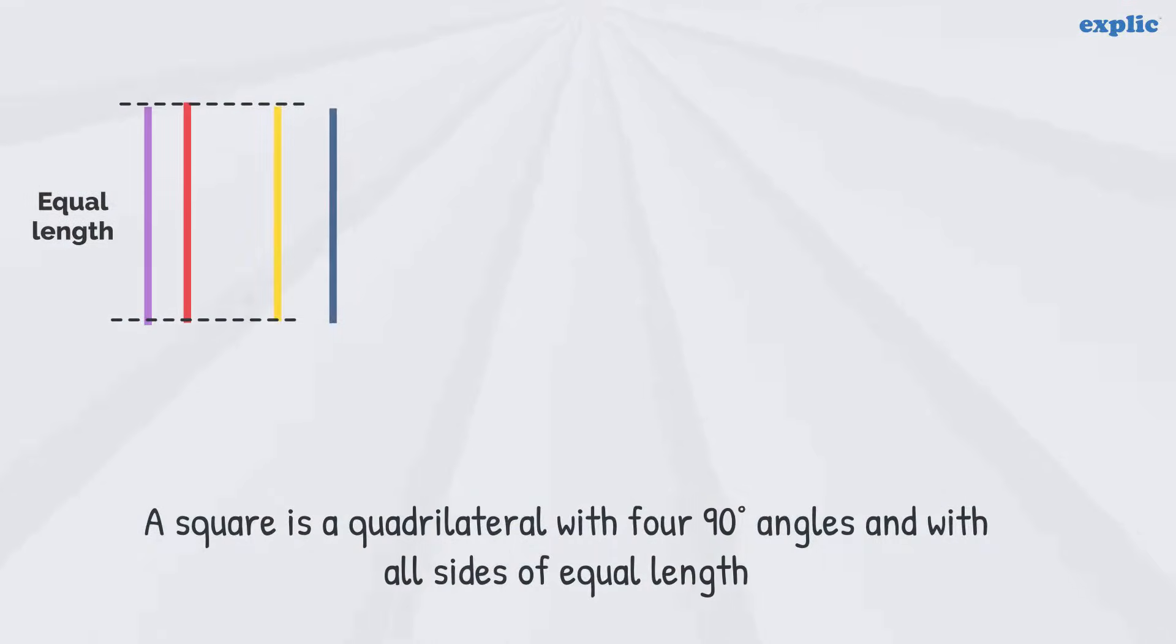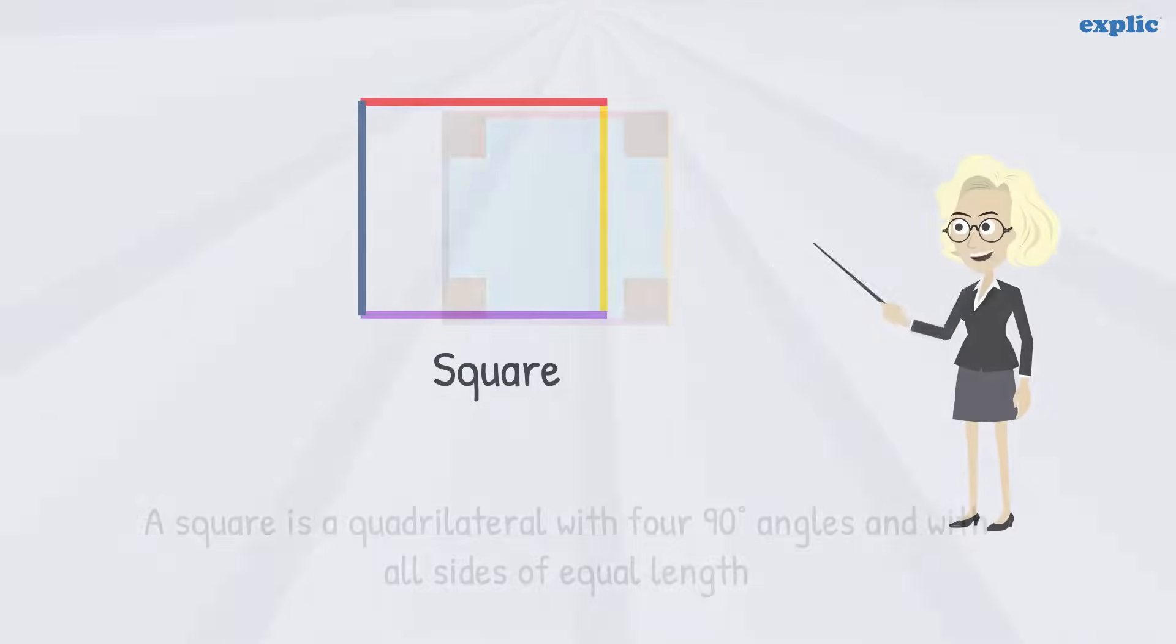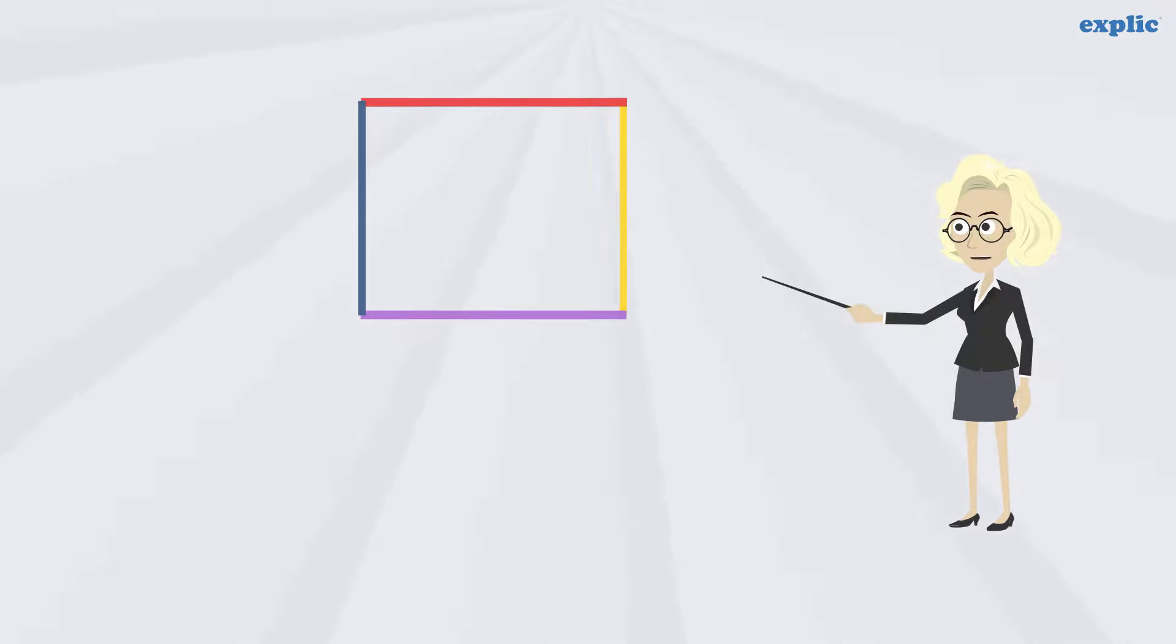A square is a quadrilateral with four 90-degree angles and with all sides of equal length. If you compare a rectangle and a square, the difference is the length of the sides. A square has all sides equal, whereas a rectangle has only opposite sides equal.